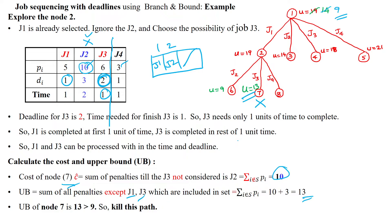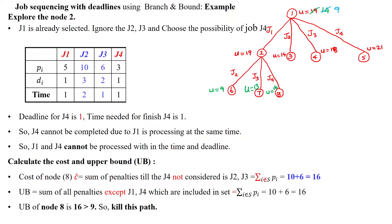Exploring the combination of j1 and j4 (ignoring j2 and j3). The maximum deadline from j1 and j4 is 1. With only 1 day available and job 1 already filling that day, job 4 cannot be accommodated. So this is not feasible — kill this path.